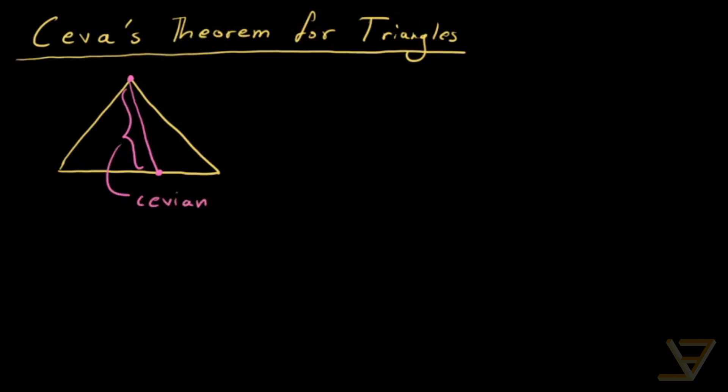And what Ceva's theorem talks about is when you have a triangle like this and you are talking about Cevians from all three vertices being concurrent at some point in the interior of the triangle like this orange point here. Let's call it P.